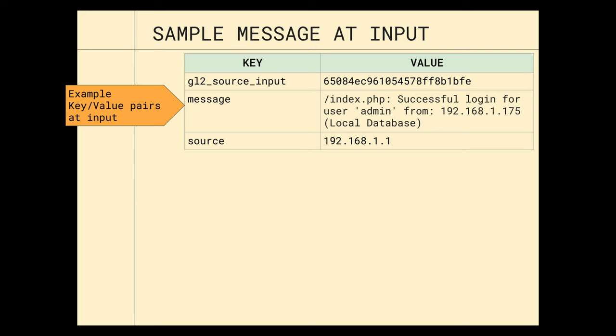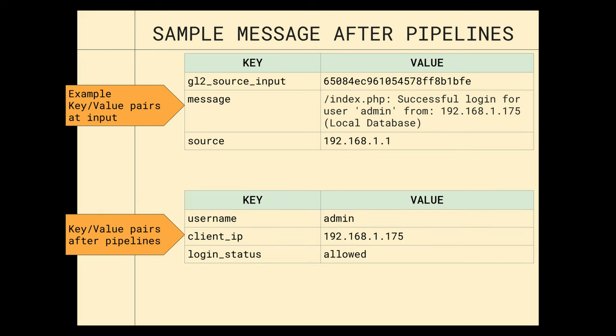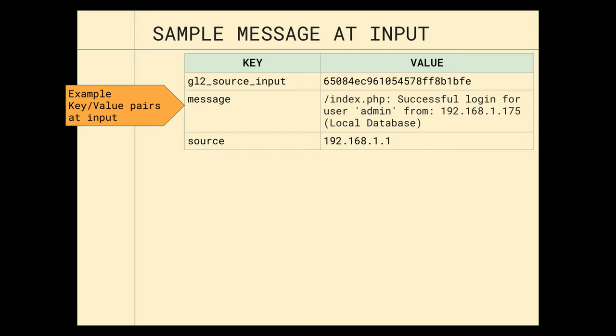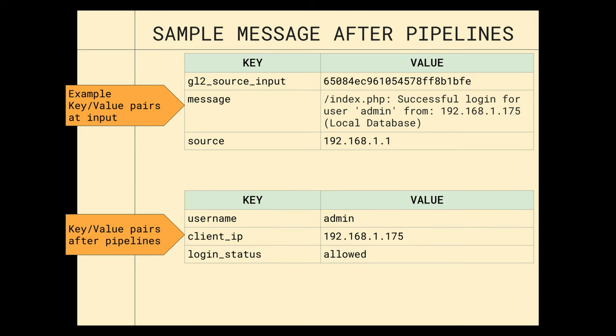So let's take an example. If I have a pipeline rule that adds some additional key-value pairs to a message, I then can't build a stream rule based on that information. Because when the message is flowing through this list top to bottom, it hasn't gotten to the pipeline rules yet to add the additional key-value pairs. I can only build stream rules based on what is currently in the message, and none of the stuff I've done in the pipeline rules is in the message yet.